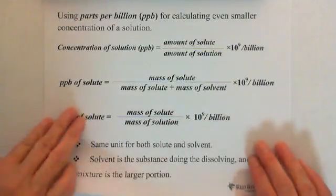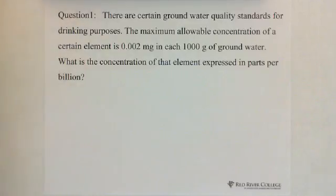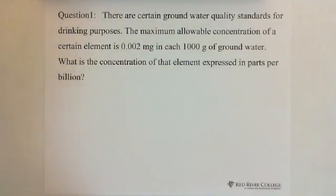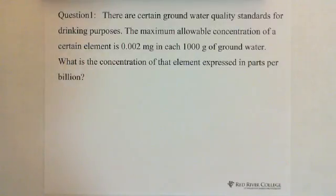So let me show you some questions. Question 1: There are certain ground water quality standards for drinking purposes. The maximum allowable concentration of a certain element is 0.002 milligrams in each thousand grams of ground water. What is the concentration of that element expressed in parts per billion?